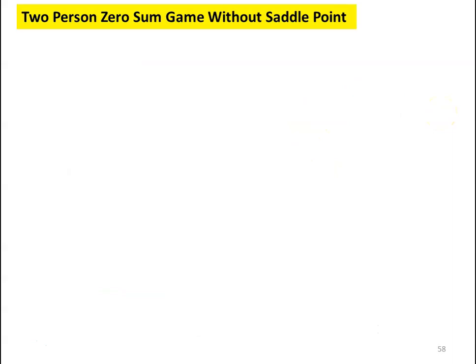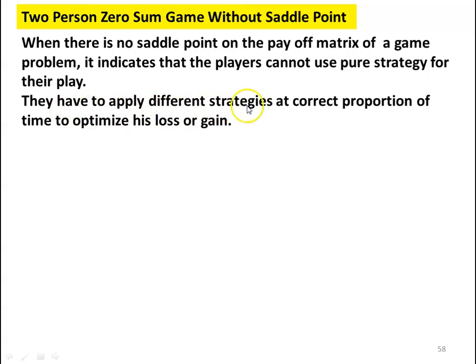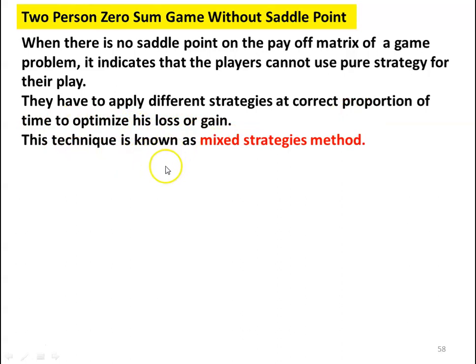We discussed the basics of the 2×2 zero-sum game without saddle point. When there is no saddle point in the payoff matrix, it indicates that the players cannot use the pure strategy. When there is a saddle point, the strategies corresponding to it are the pure strategy — player A and player B will use only one strategy. When there is no saddle point, the game is solved by arithmetic, graphical, or matrix method. The players must apply different strategies at the correct proportion of time to optimize their loss or gain. This technique is known as the mixed strategies method.